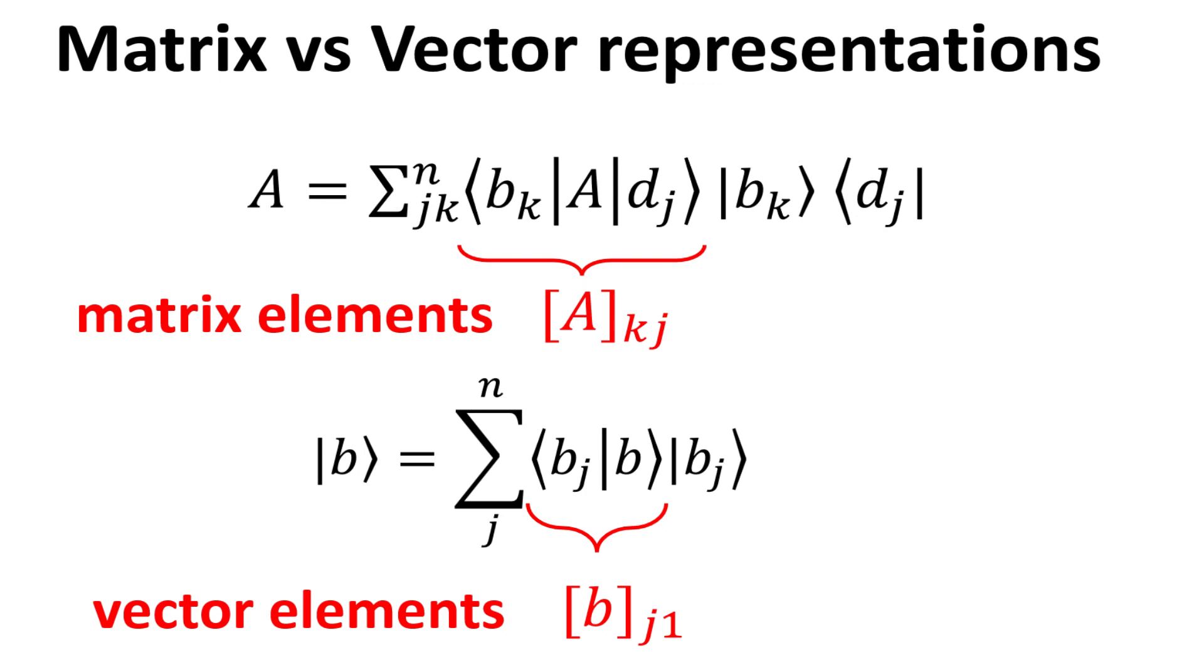In similar fashion, using the completeness relation, it allow us to express a general vector b ket in terms of a sum of the orthonormal basis vectors b sub j. Where the vector elements is given by the inner product of b sub j ket with b ket.